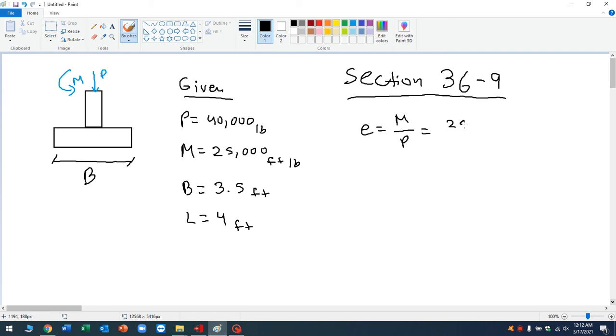So your eccentricity is just going to be your moment divided by your point load. So here we're going to do 25,000 foot-pounds divided by 40,000. And what you're going to get, let's see, let's solve it here, 0.625 feet is your eccentricity.